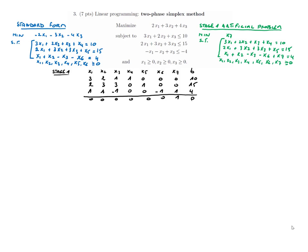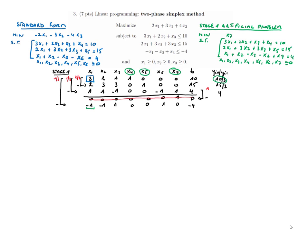The artificial problem is written as a tableau with basic variables x4, x5, and x7. We need zeros above and below each pivot, but here we have a non-zero entry below the pivot for x7. So we must perform an elementary row operation with multiplier 1 to bring this tableau into canonical form.